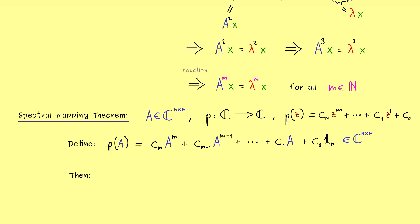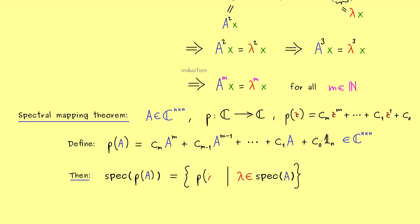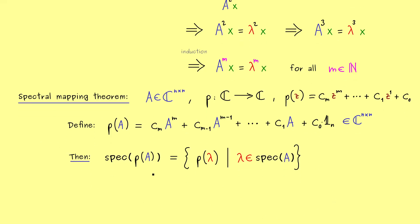Now we can state the spectral mapping theorem. It tells us that the spectrum of p(A) is completely determined by the spectrum of A. Namely, the spectrum of p(A) equals the set of all complex numbers p(λ) where λ ranges over the spectrum of A. So if the spectrum of A has n elements, this set has at most n elements. For example, for a constant polynomial it will be only one element. This result is what we call the spectral mapping theorem for polynomials.